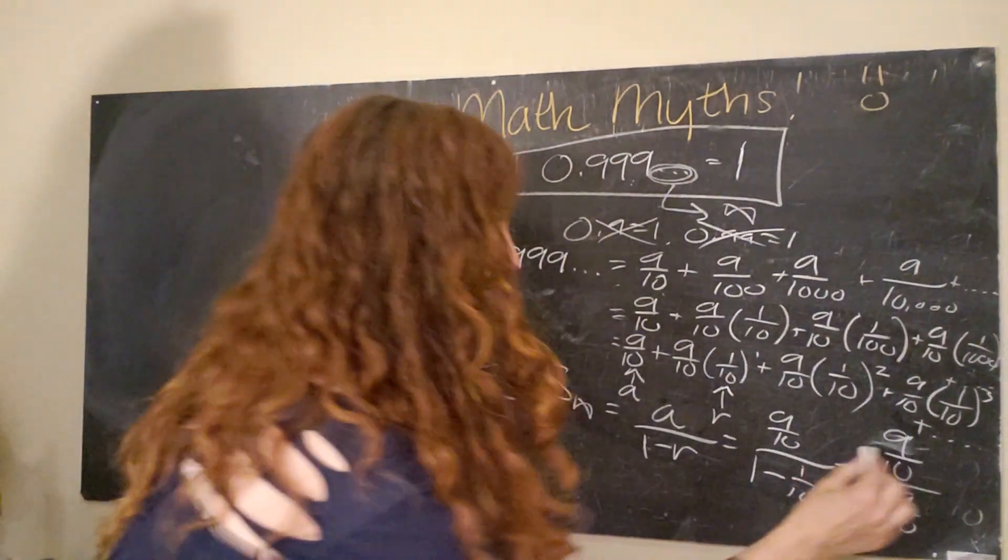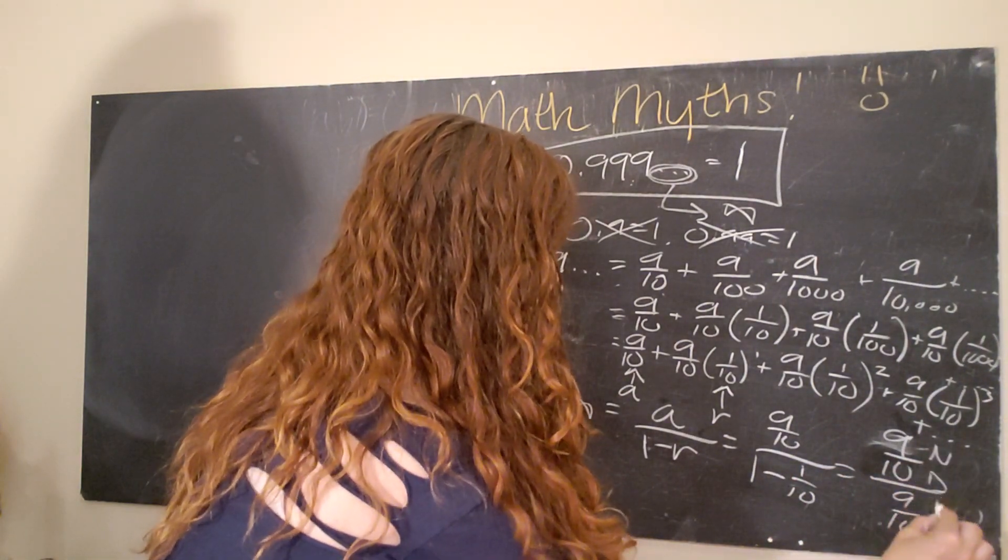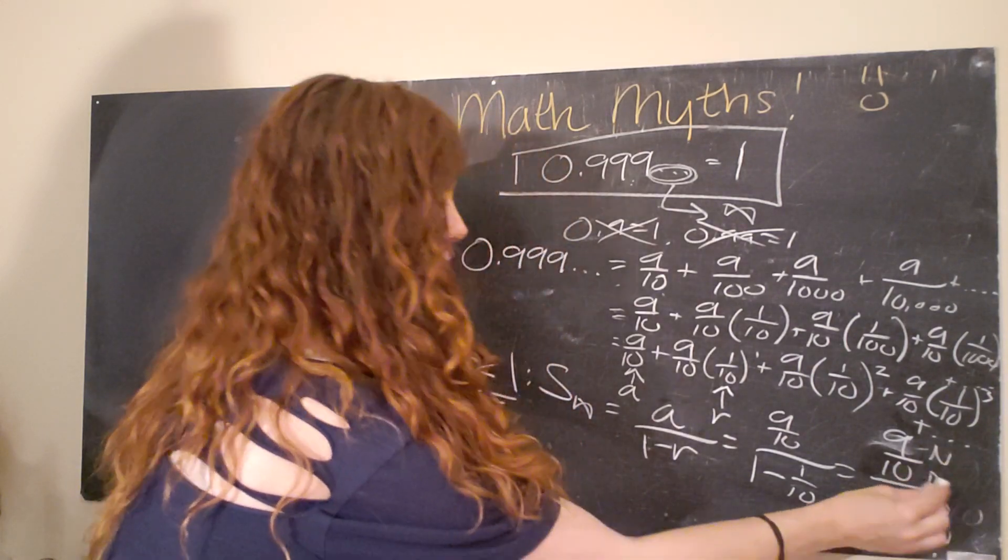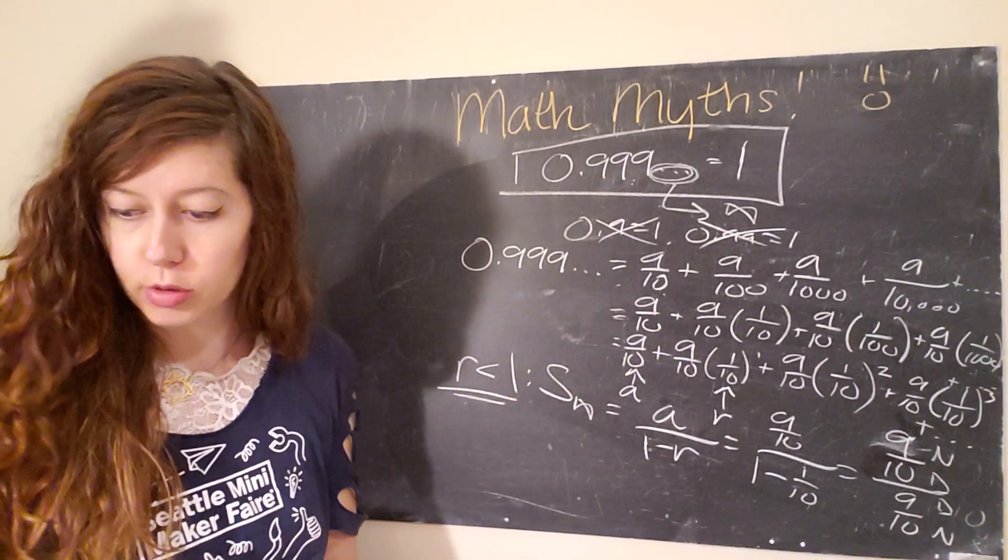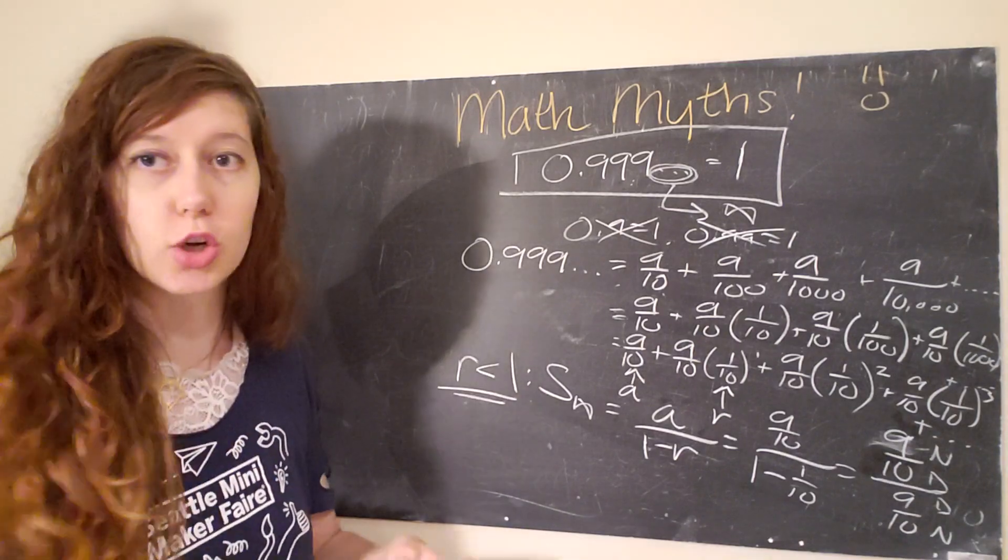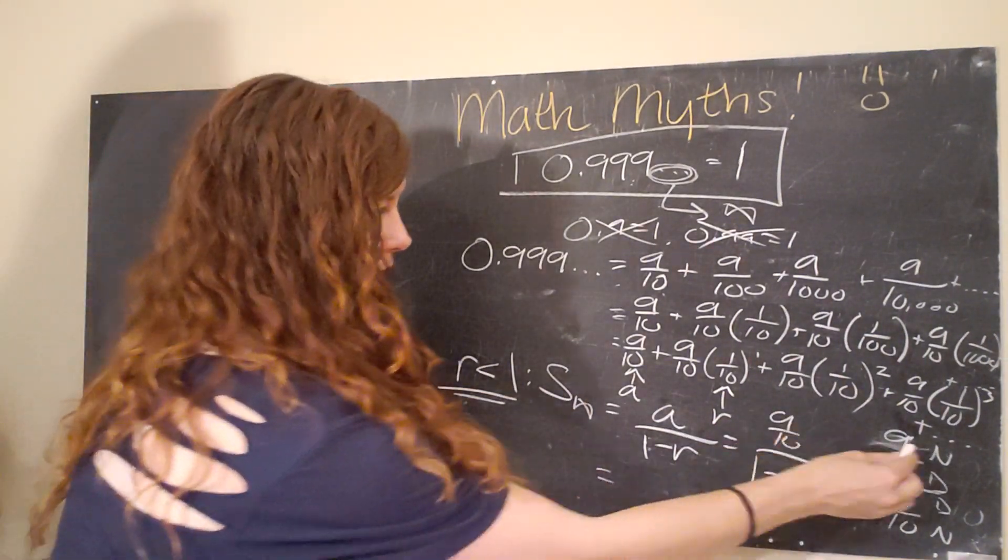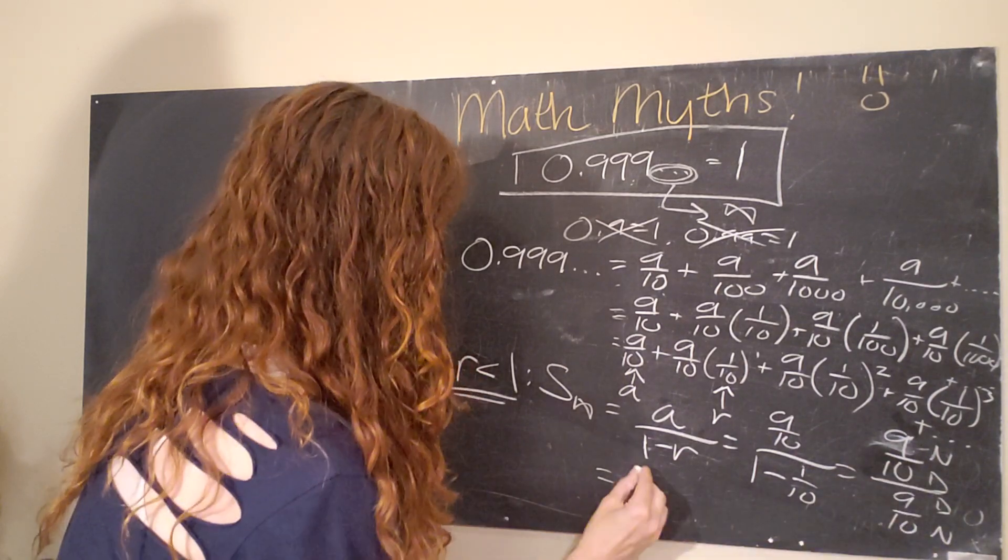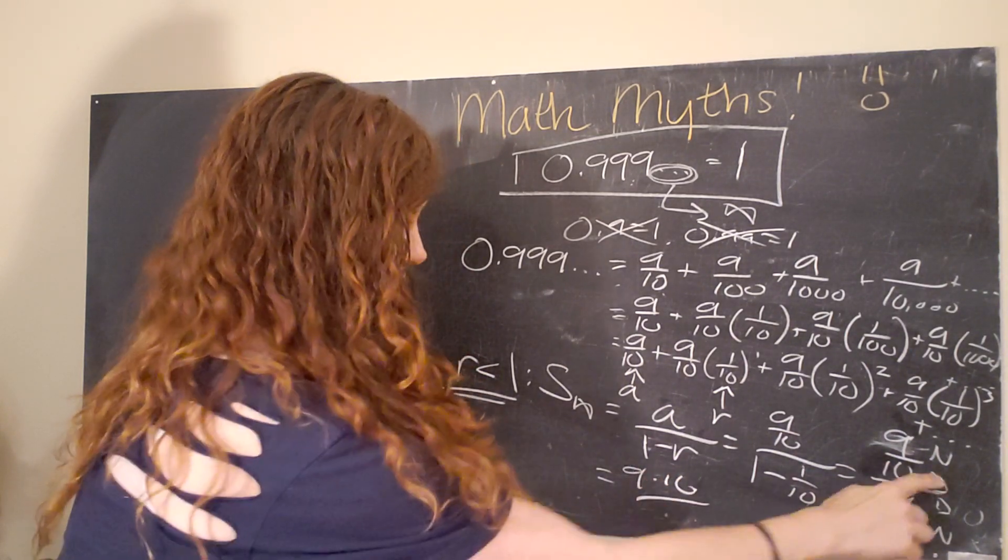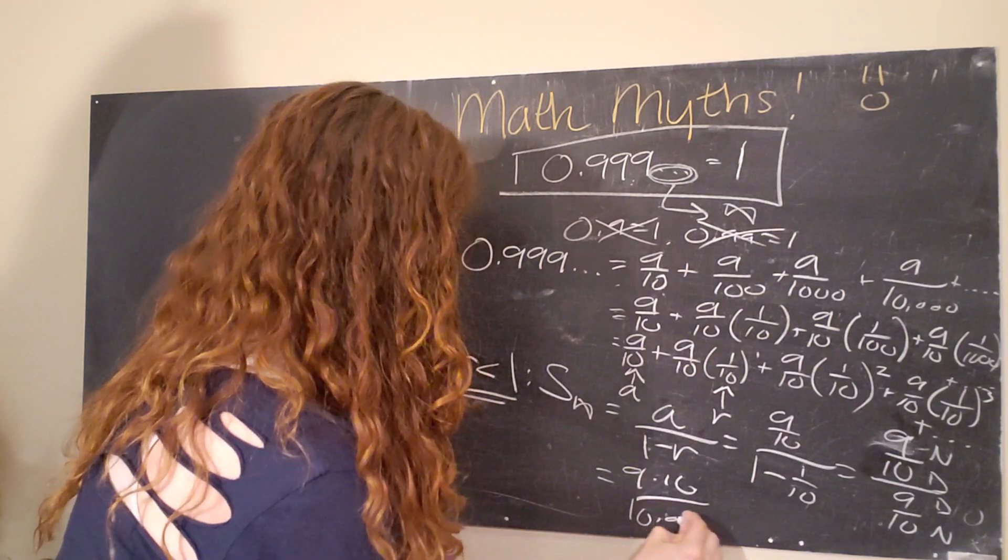One of my math teachers taught me a really cool trick, N, D, D, N, which numerator, denominator, denominator, numerator. And basically, that's just a quick way to figure out how this fraction simplifies. And what we find is that we have a 9 and a 10 in the numerator, and a 10 and a 9 in the denominator.